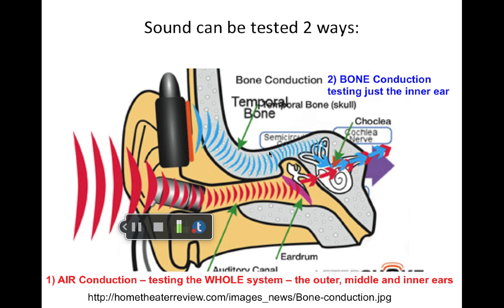Differential diagnosis of hearing loss is part of the scope of practice of audiologists — audiologists figure out where the problem is. To do that, they perform two types of testing. Air conduction testing tests the whole system: the outer ear, the ear canal, the middle ear, and the cochlea. Bone conduction testing uses a bone oscillator or vibrator placed on the mastoid bone of the skull, which vibrates the bone and in turn vibrates the fluid of the cochlea so you're able to hear.